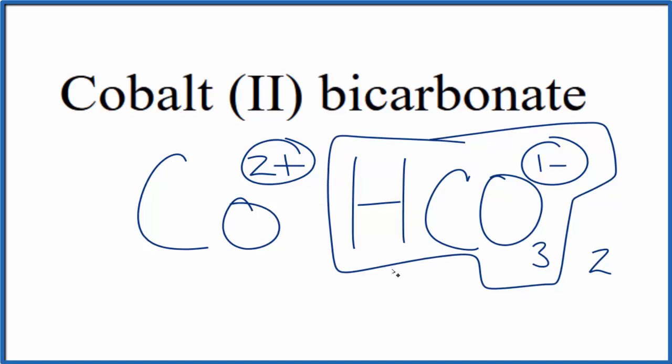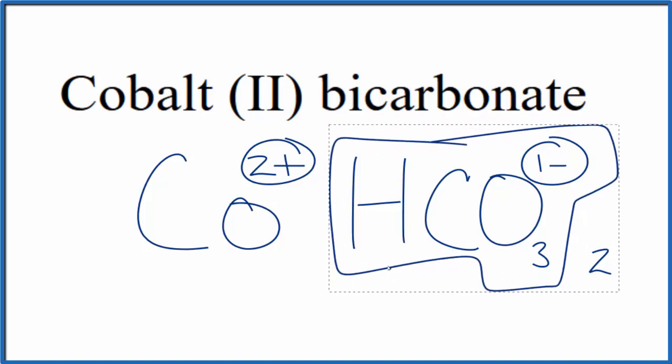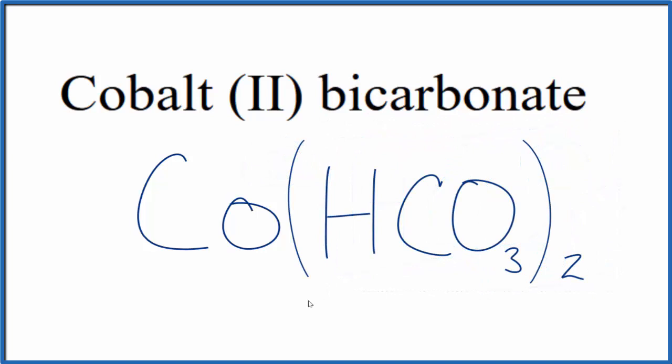We would, though, need to put parentheses around the bicarbonate ion. So this is the formula for cobalt-2 bicarbonate. We have the 2 plus on the cobalt, and then we have two of these bicarbonate ions, each one's 1 minus.